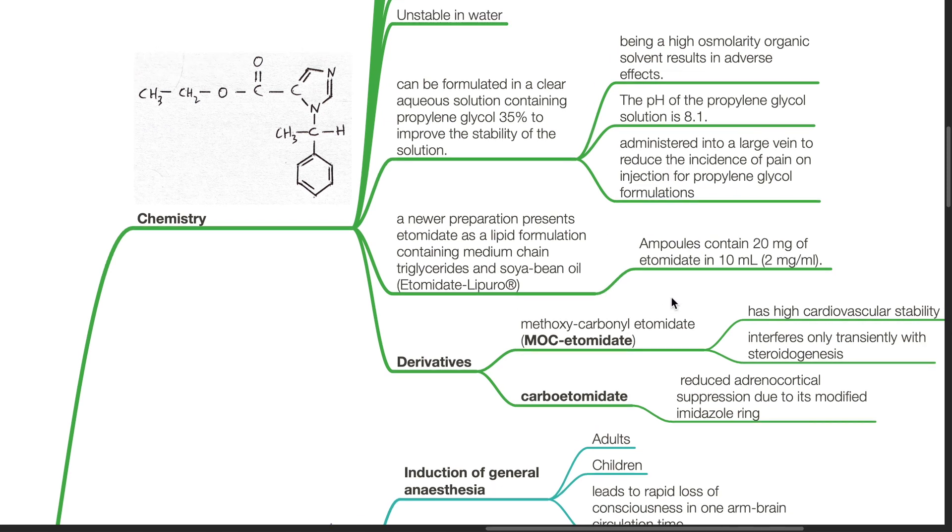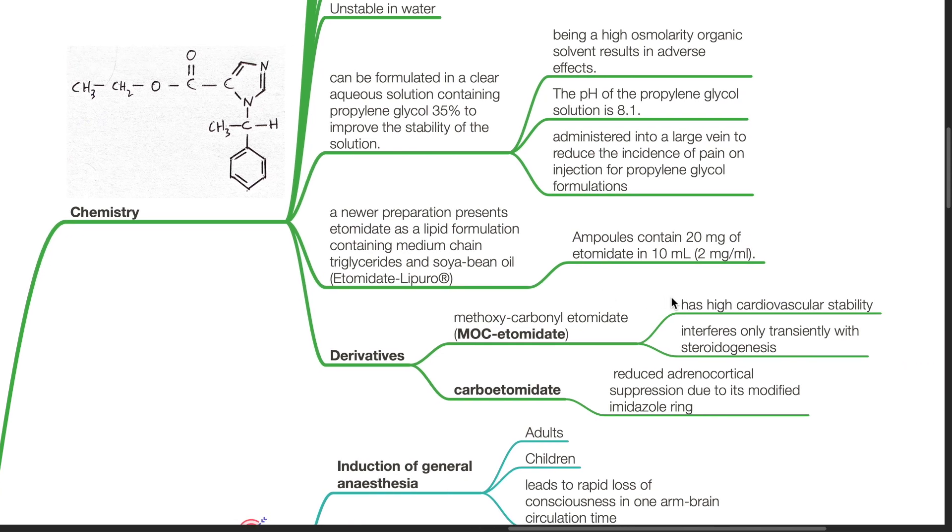Etomidate lipuro comes in ampules containing 20mg of etomidate in 10mls at a concentration of 2mg per ml. Derivatives of etomidate include methoxycarbonyl etomidate, MOC etomidate, which has high cardiovascular stability and interferes only transiently with steroidogenesis, and carboetomidate, which has reduced adrenal cortical suppression due to its modified imidazole ring.